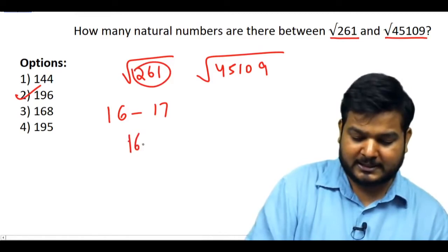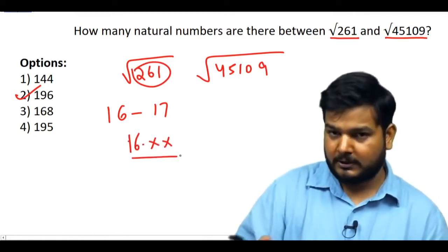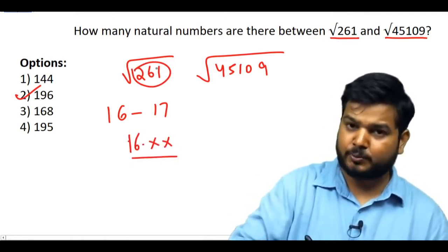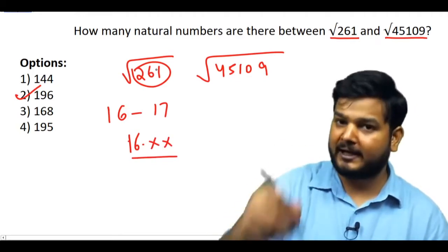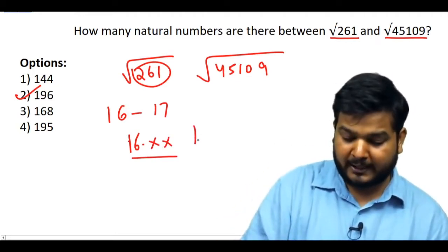√261 = 16.something, so the first natural number after this value is 17. Starting from 16.something, the first natural number you encounter is 17.